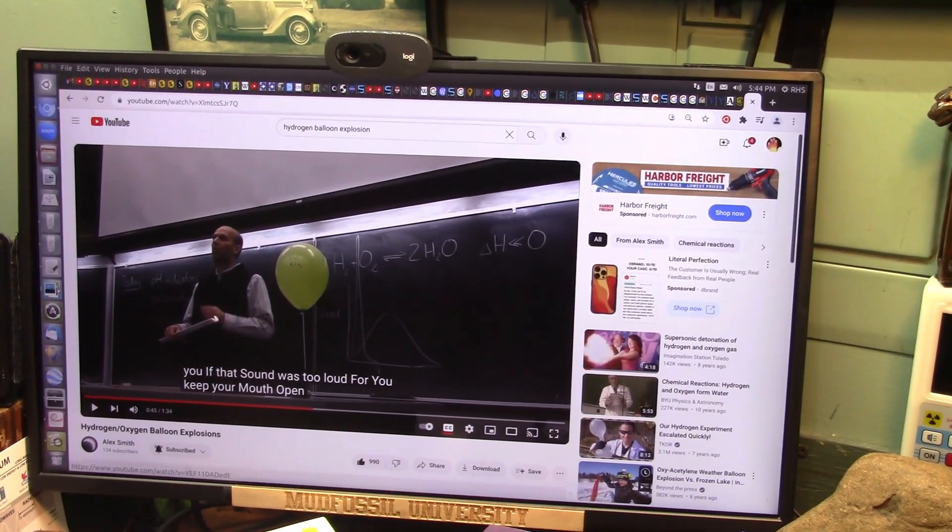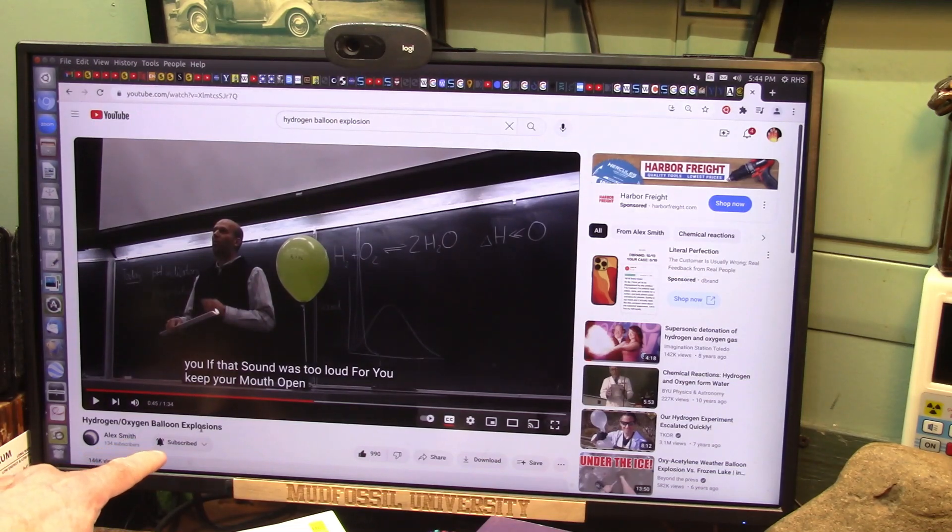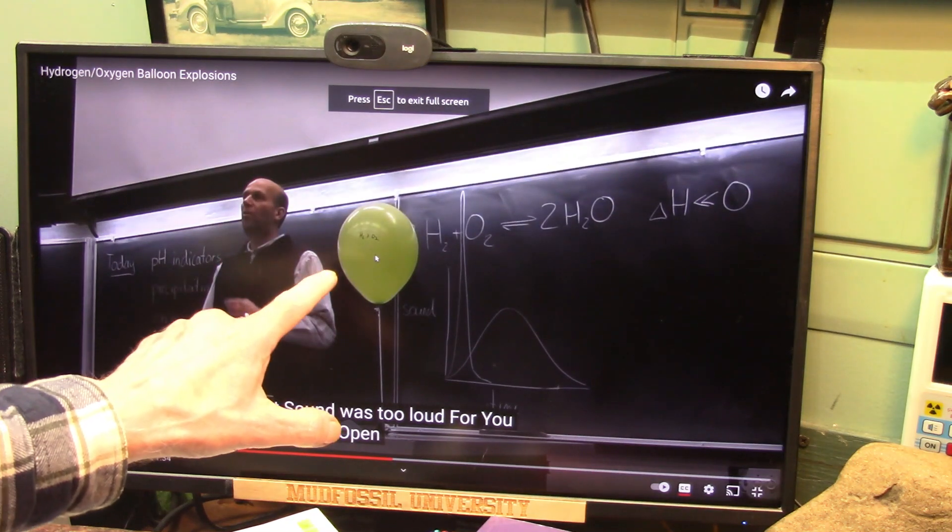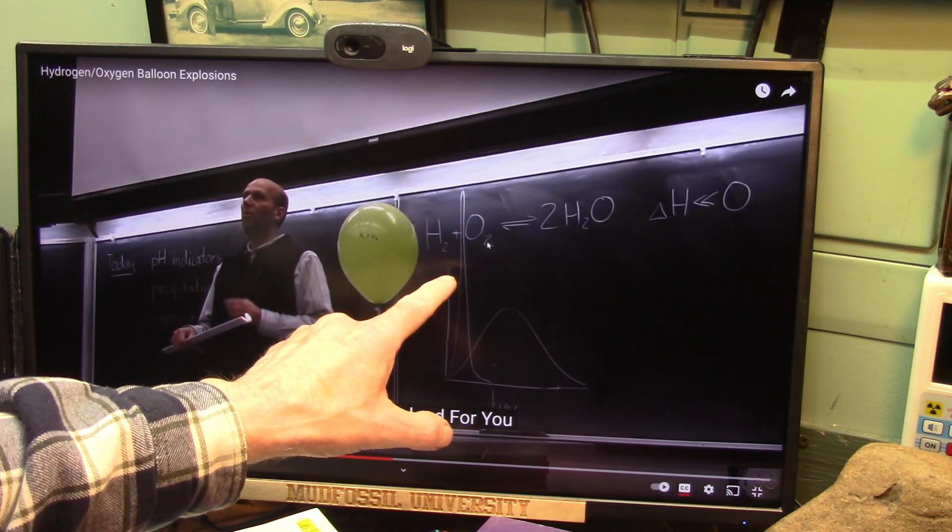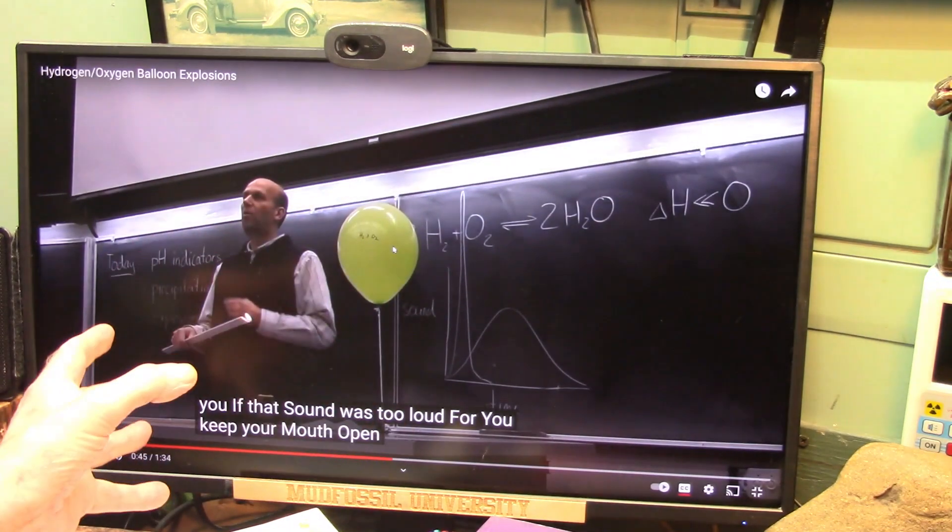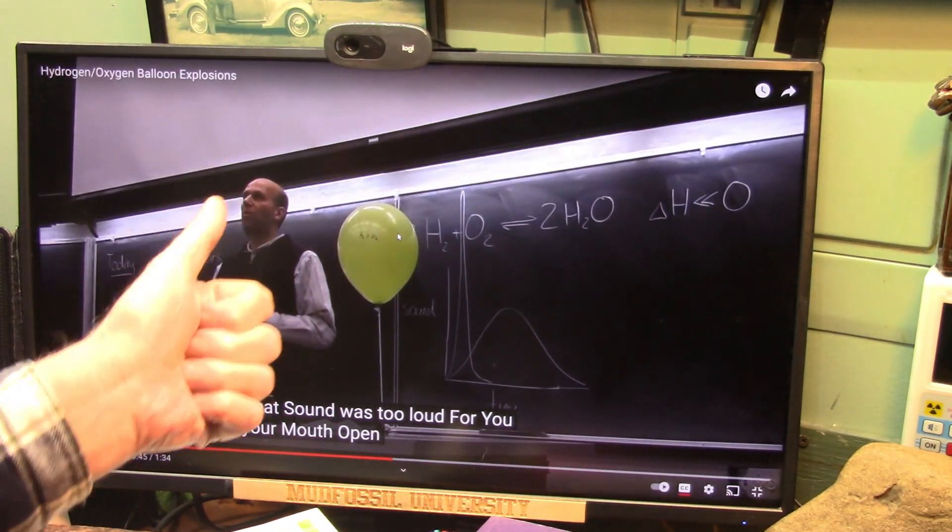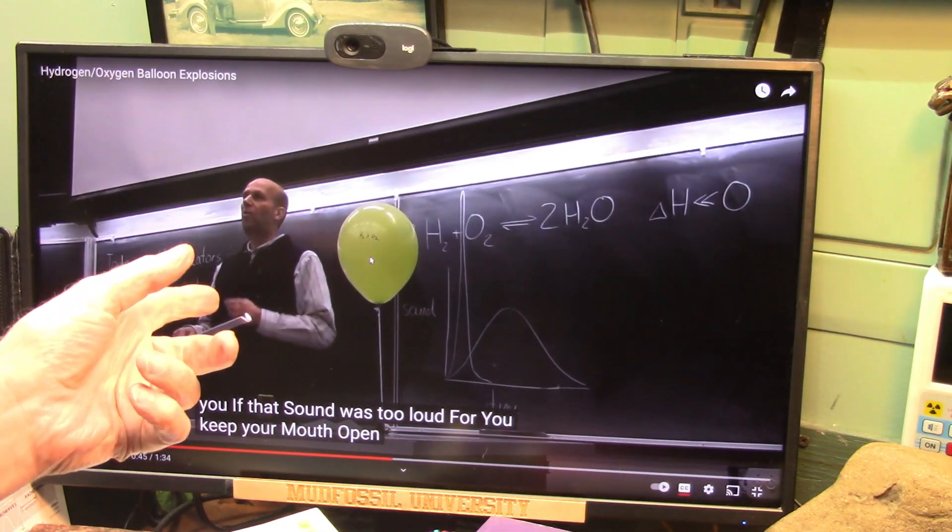Alright, this is Alex Smith and he's going to show this hydrogen oxygen balloon explosion. I'm going to open this up. He's got a balloon and it's got H2 plus O2. H2O2. That means he's got oxygen is H2O. So he's got H2O2, an extra oxygen.